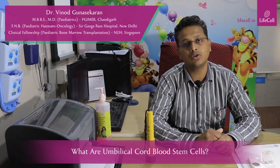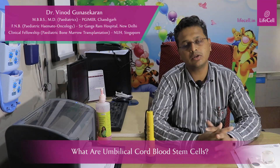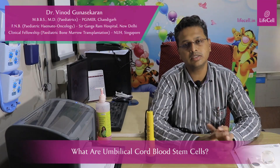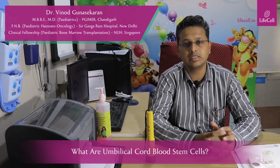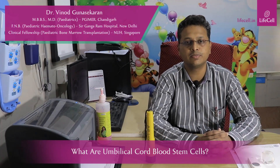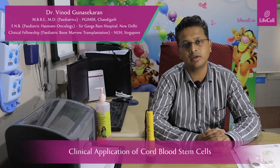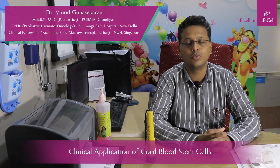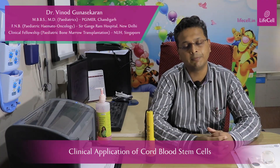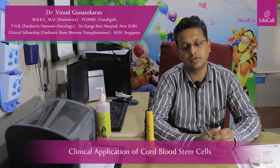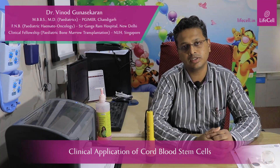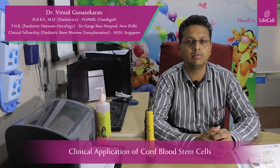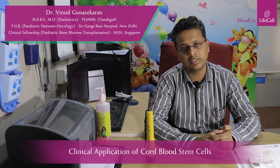If a match is not available in that registry, then the third option is umbilical cord stem cells. What are umbilical cord stem cells? These are the stem cells which are in the umbilical cord when the baby is born. Usually this is thrown away after delivery along with the placenta. However, they are a rich source of hematopoietic stem cells which have a self-renewable capacity and can be used in treatment of a lot of disorders in future, including hematological malignancies, metabolic disorders and immune deficiencies.